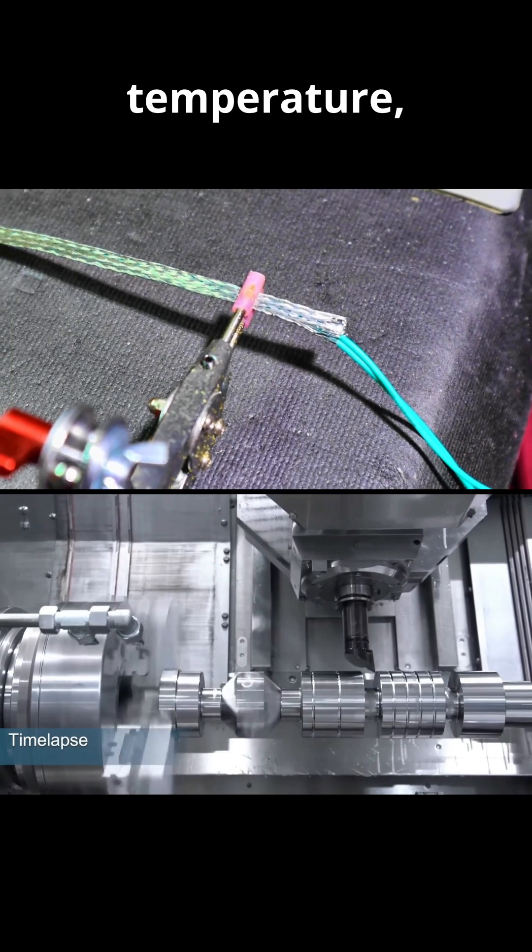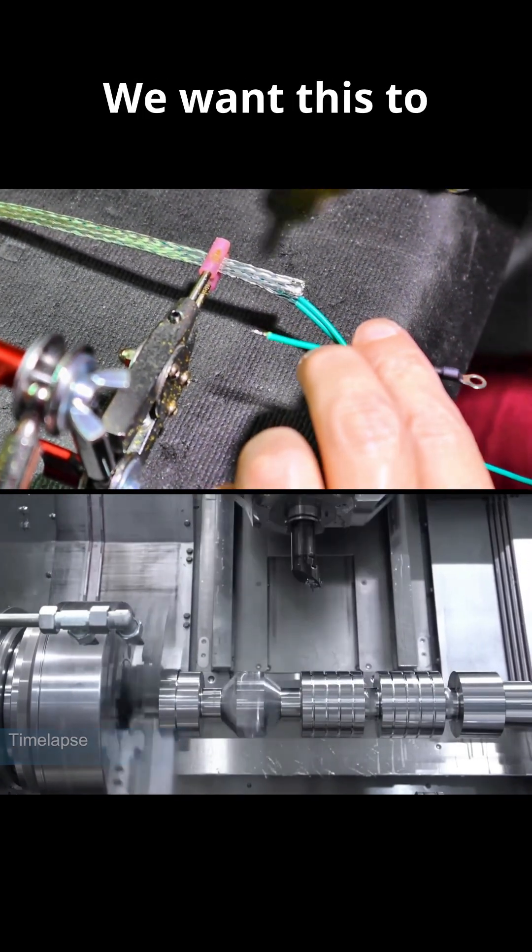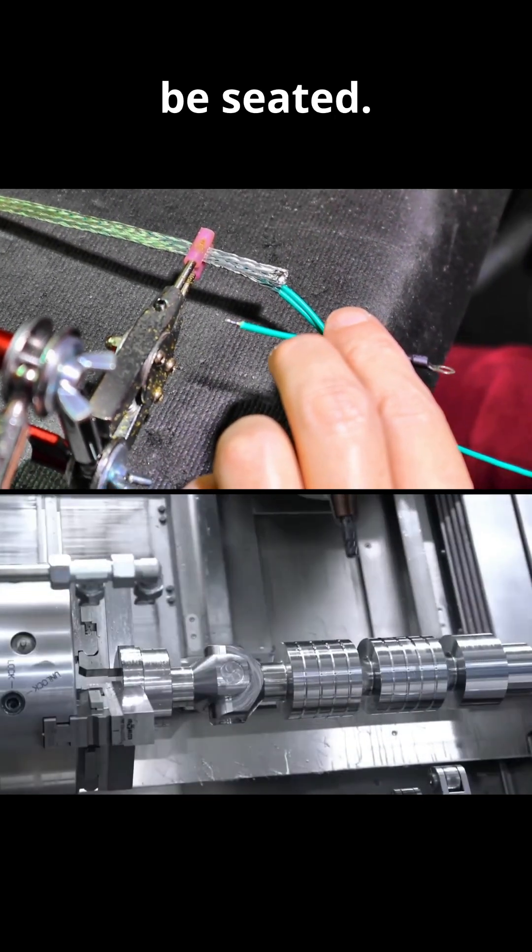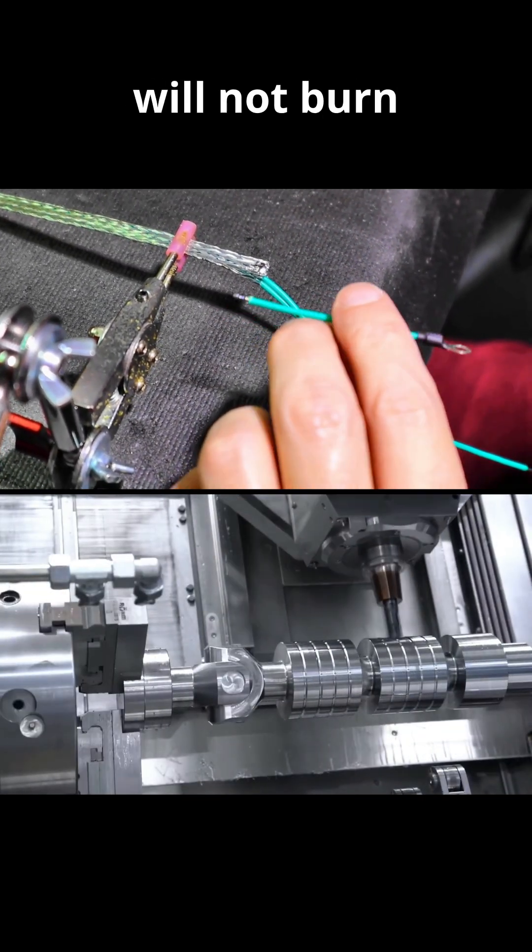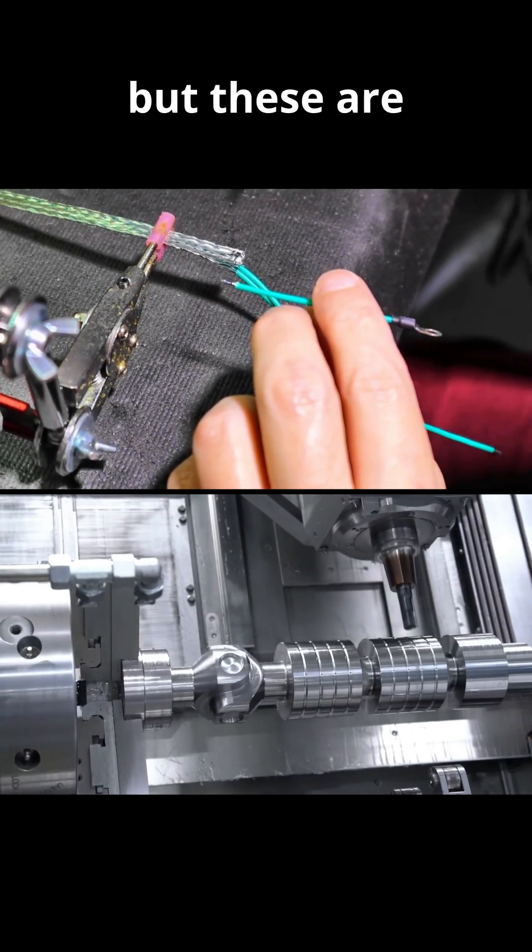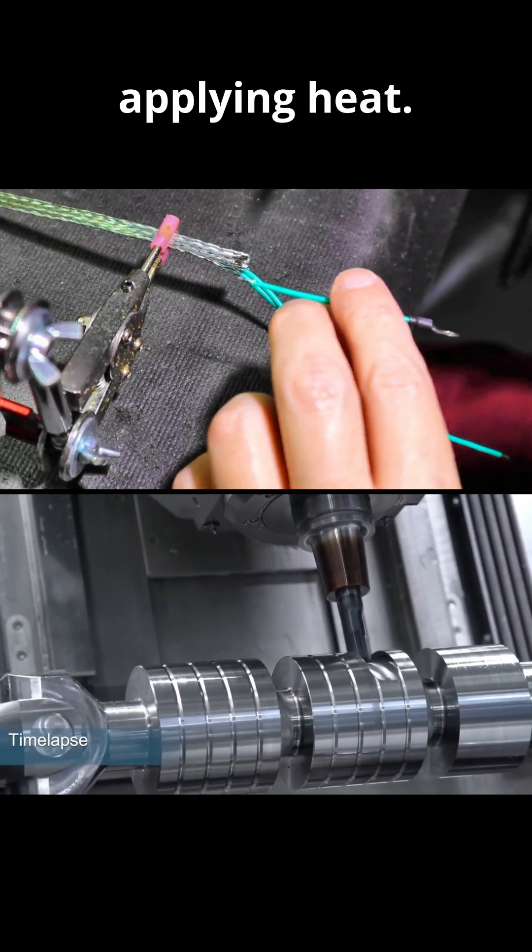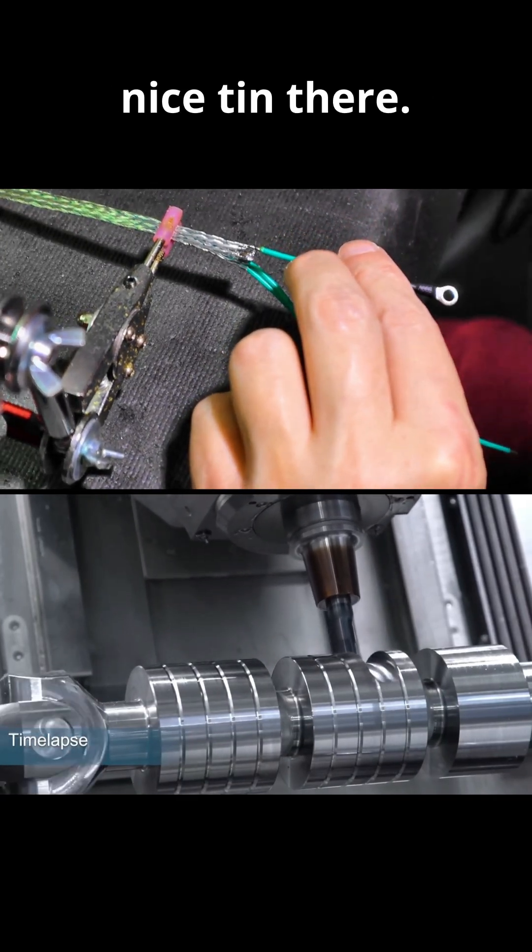Now I'm going to turn my iron up in temperature because this, like I said, is a much larger conductor. We want this to be seated. Silicone leads will not burn very easily. You should still pay attention to the heat, but these are much more reasonable when it comes to applying heat. Now we've got a nice tin there.